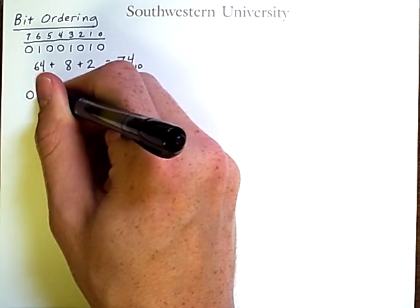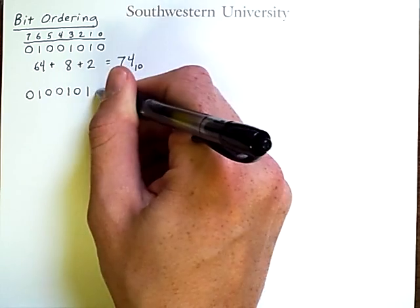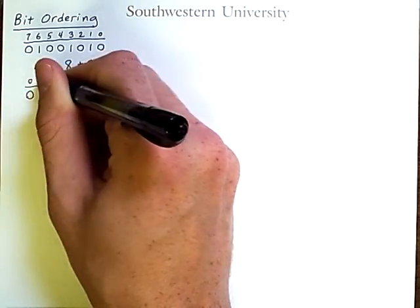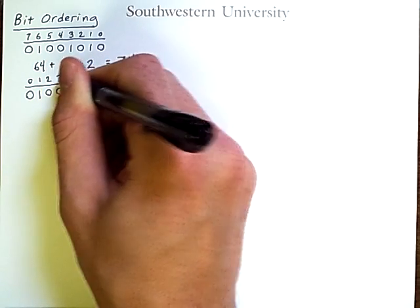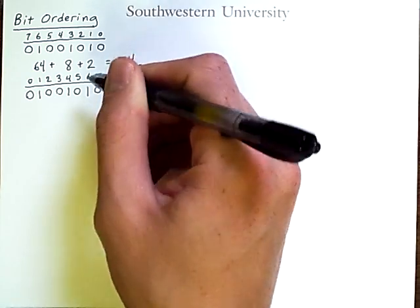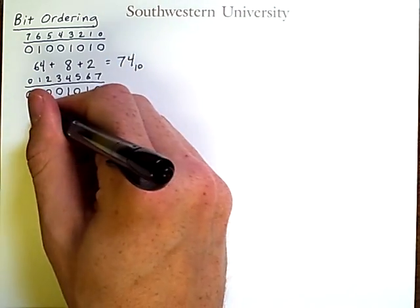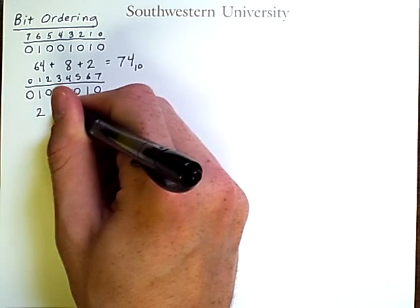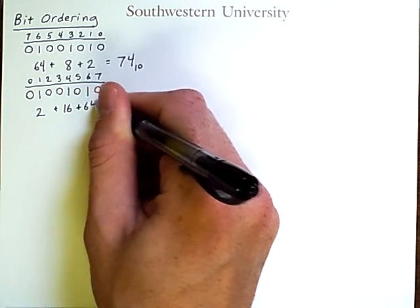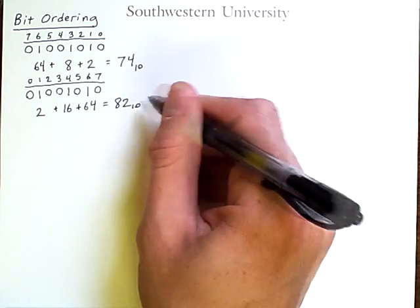if I write this number out again but I reverse the order of the exponents like so, then my interpretation changes. I end up with 2 plus 16 plus 64 and my answer is 82 in base 10.